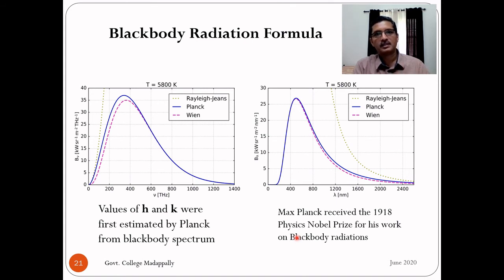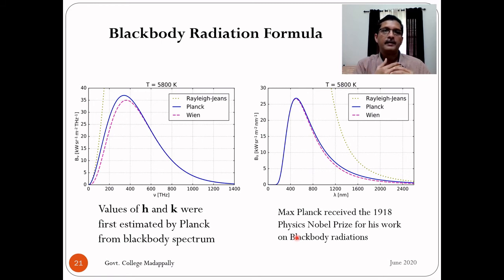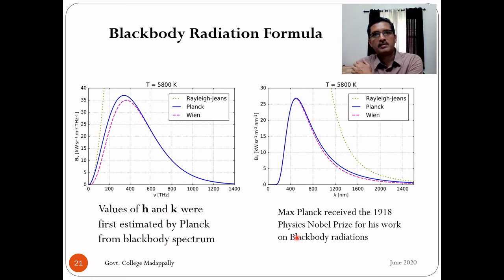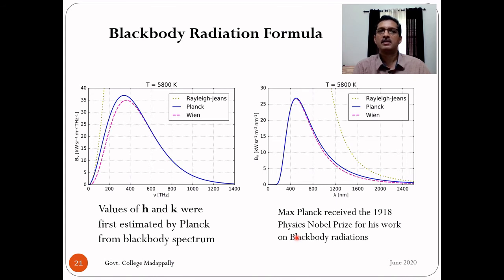Kirchhoff's first paper on the blackbody radiation problem in 1860 and Max Planck's solution 40 years later in 1900 both appeared in the same German physics journal, Annalen der Physik (Annals of Physics). This was the major physics journal from the second half of the 19th century until the first quarter of the 20th century. In 1905, Einstein's five important papers — from his miraculous year — also appeared in the same journal, Annalen der Physik.